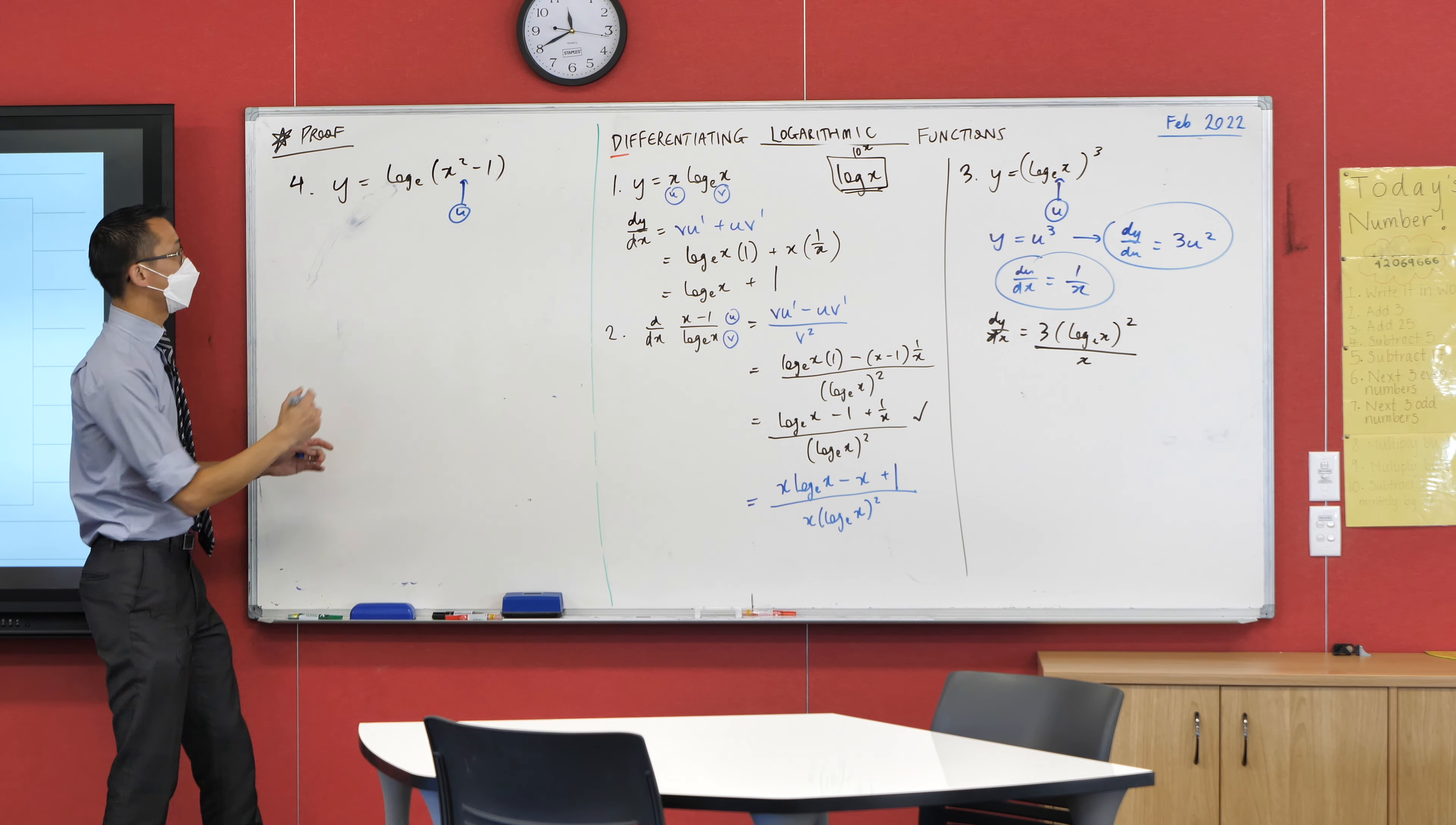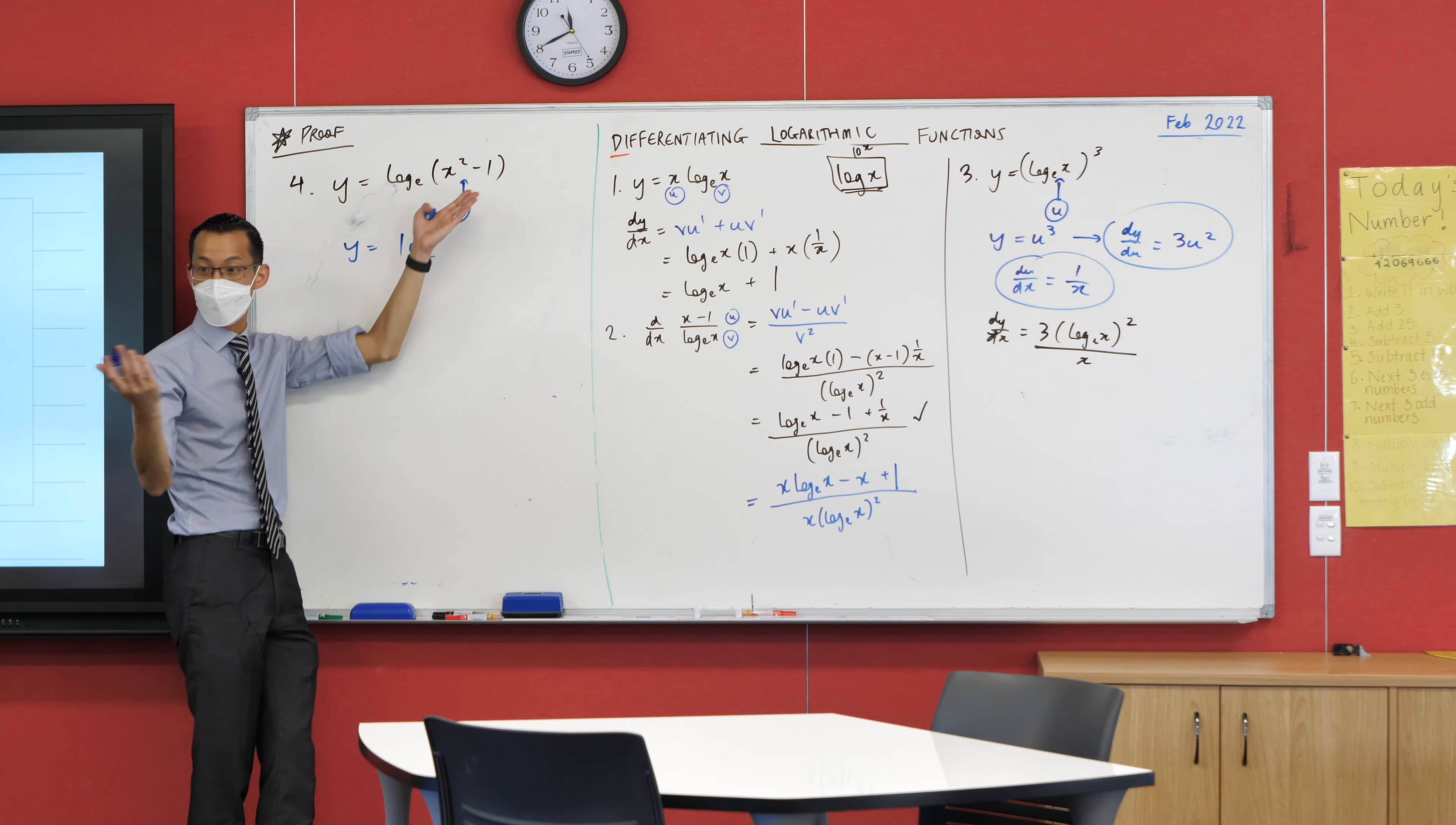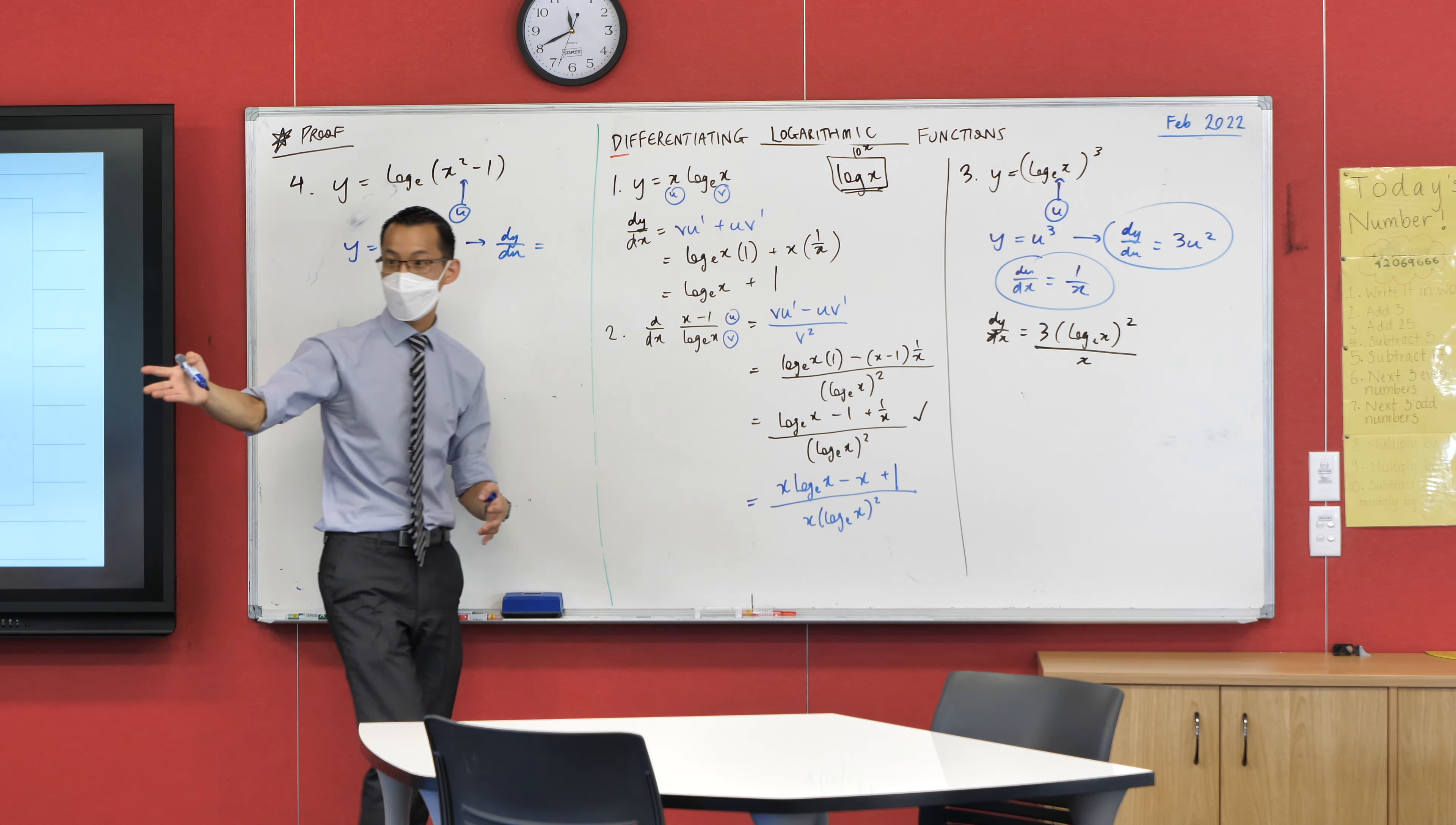That's my U. So therefore, Y is going to be equal to log base E of, well, I'm not calling it this anymore. I'm calling it U. So write that. And what this gives me is a new derivative, DY on DU. Now I've changed the letter, but as we've discussed before, the letters are just labels.